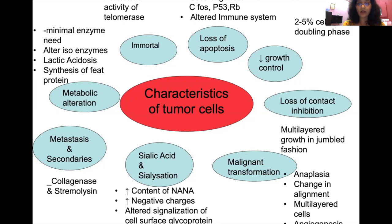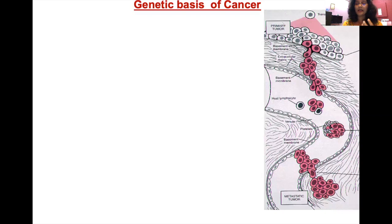These are the characteristics of tumor cells. A diagram shows how these cells are bigger and multi-layered. Because of collagenase, they can invade through the basement membrane, go to the extracellular matrix, and through blood vessels reach another organ to form metastasis.